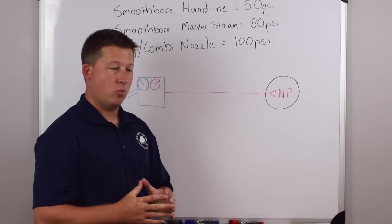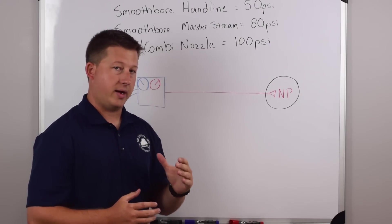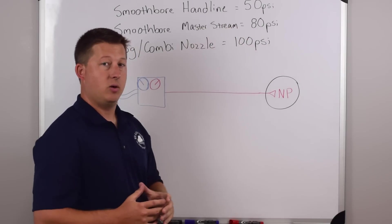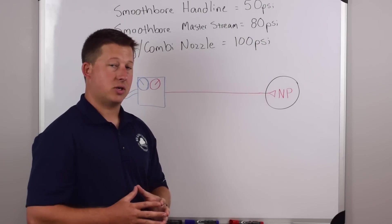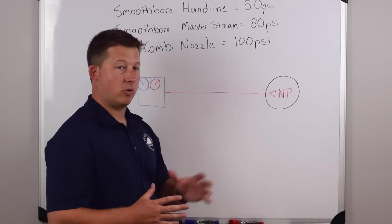So for a quick summary, when we calculate gallonage out of a smoothbore hand line, we're going to use 50 PSI. When we go to the smoothbore master stream, we're going to use 80 PSI. And when we do the fog and combination nozzle flow calculations, we'll use 100 PSI.